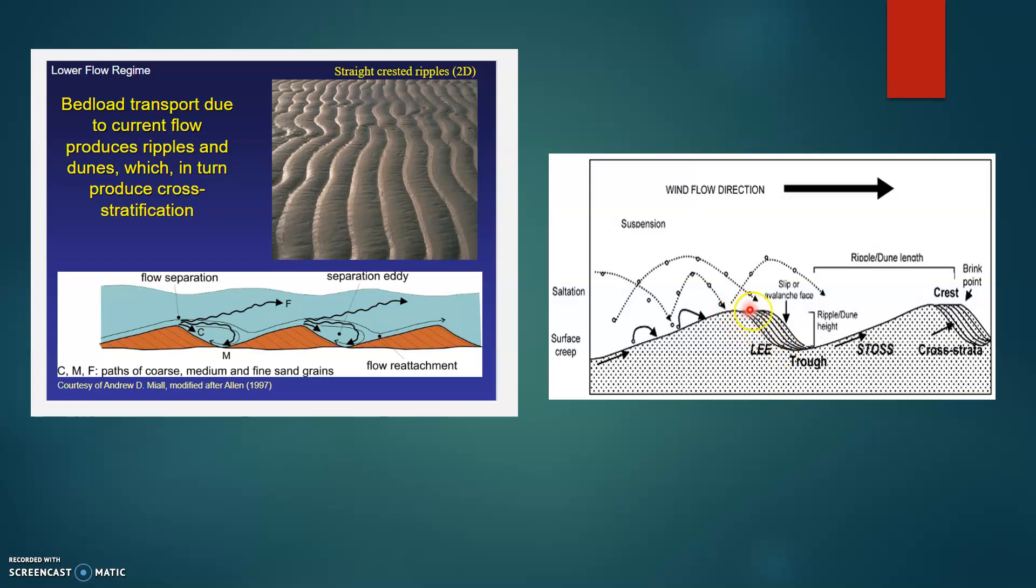Therefore, the angle between where the sediments land and the next dune length is shallower and the cross stratification is thinner if you compare that to what happens in traction. So the cross stratification from traction is usually larger in size compared to cross stratification that is formed from saltation.